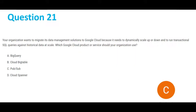Starting with question 21: your organization wants to migrate its data management solutions to Google Cloud because it needs to dynamically scale up or down and to run transactional SQL queries against a historical data scale. Which cloud product or service should your organization use? Option A is BigQuery — it's a data warehouse that stores large amounts of data, but the question requires running transactional SQL queries at scale, so we don't need BigQuery. Let's cross off option A.